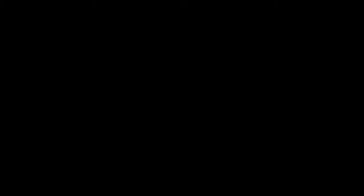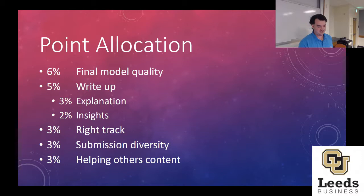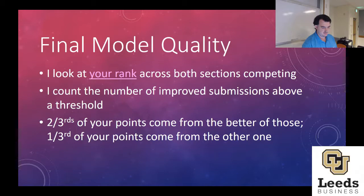Here's the point allocation. Most points go to final model quality, then there's a write-up, your right track submission, submission diversity, and helping others. For final model quality, the scoring works something like a leaderboard with a ranking, team names, submission time, and a score. The higher your score, the better you do. If there's a tie, whoever submitted first goes higher. You can filter for people in our section by typing Indicott in the search box.